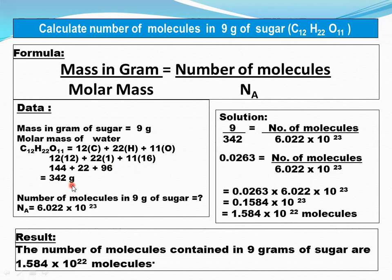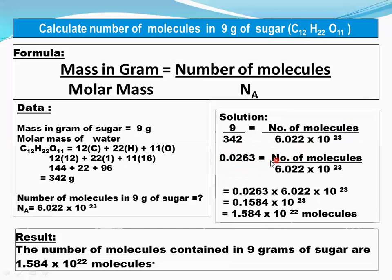Molar mass of sugar or lactose is 342. Number of molecules in nine grams of sugar can now be calculated. Avogadro constant is 6.022 × 10²³. Placing the values into the formula: 9 divided by 342 equals number of molecules divided by Avogadro constant. We obtain 0.0263 equals number of molecules divided by Avogadro constant.